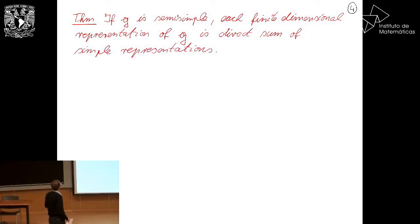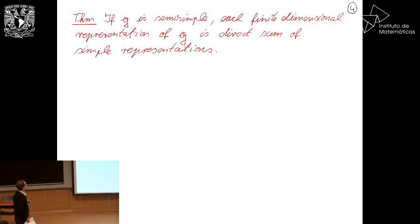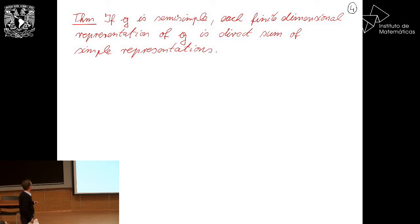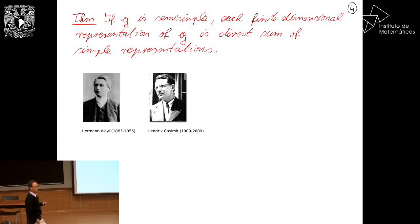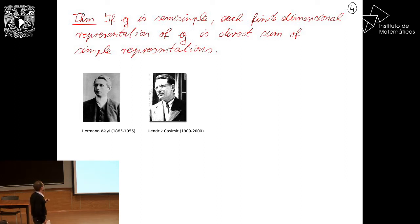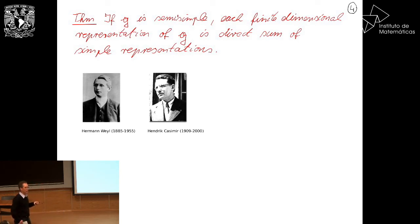For semi-simple Lie algebras, Weyl's theorem states that each finite-dimensional representation is a direct sum of simple representations. This is classical. Hermann Weyl gave a geometric proof using unitary representations. Hendrik Casimir — a physicist who did this in his early 20s — came up with the famous Casimir element, which is crucial for the algebraic proof of this result.